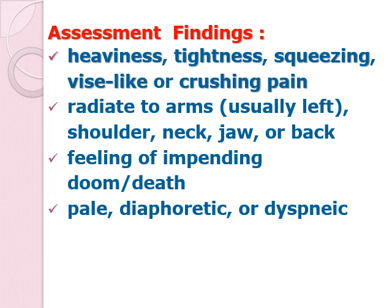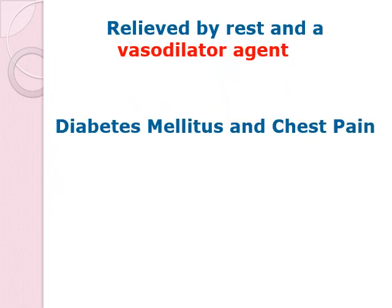The pain can radiate down to the arms — usually the left arm — and can also radiate to the shoulder, neck, jaw, or back. The patient would often complain of a feeling of impending doom. During the attack, they would be pale, diaphoretic, and dyspneic. Unique to angina is that the chest pain is brought about by exertion and relieved by rest and vasodilator agents.